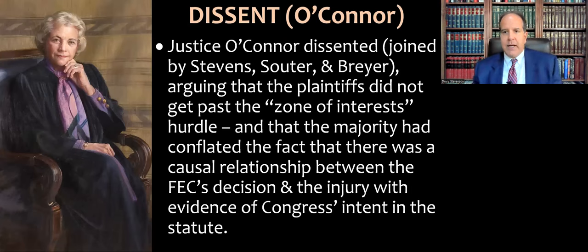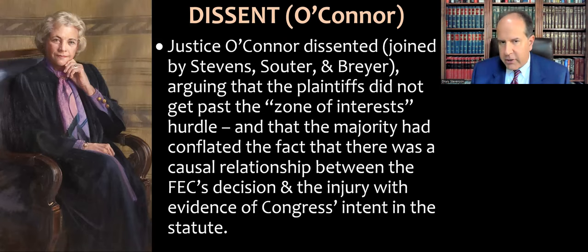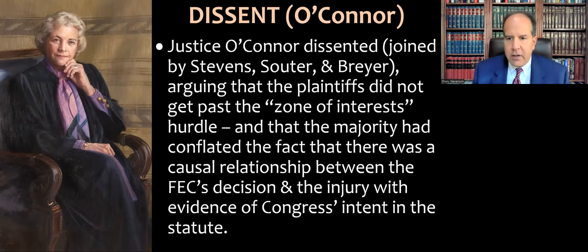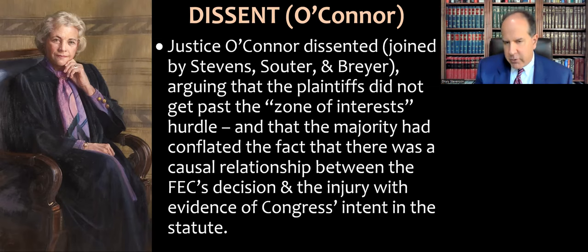We have a dissenting opinion from Justice O'Connor. Notice the breakdown: O'Connor was a Republican appointee but the swing voter on the court, and she's joined here by the left wing — Justices Stevens, Souter, and Breyer. They argued that the plaintiffs did not get past the zone of interest hurdle. The majority had conflated the causal relationship between the agency's decision and the banks' injury with evidence of Congress's intent in the statute. The dissenters acknowledged the zone of interest test is the right test, and that the agency's decision was bad news for the banks — but being harmed by an agency decision does not automatically put you within the zone of interest.